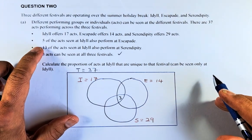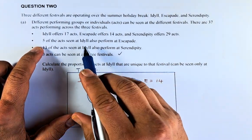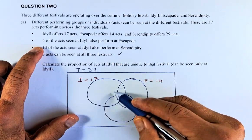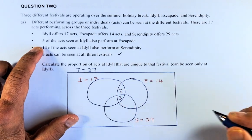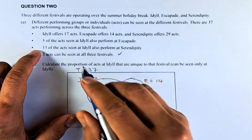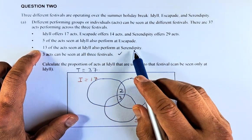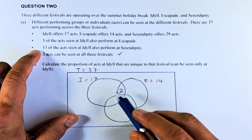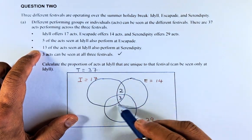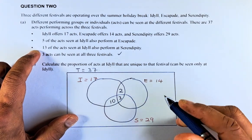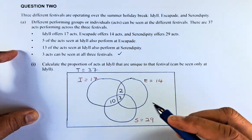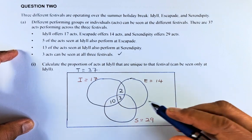So now the next thing, 5 appears at both Idyll and Escapade. So this area here is going to be 5, so if this is 3, that has to be 2. And next, 13 appears in Idyll and Serendipity. So 13 appears in I and S, so this part is going to be 13. If this is 3, so that must be 10. So now we are going to fill in the numbers in each of the regions.